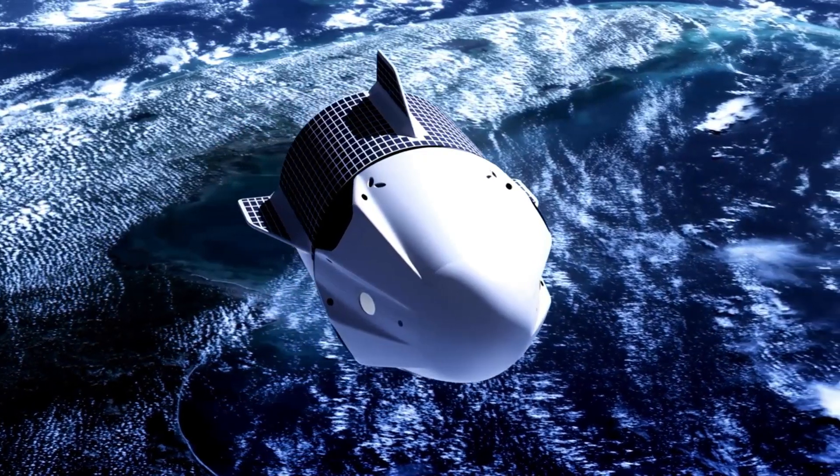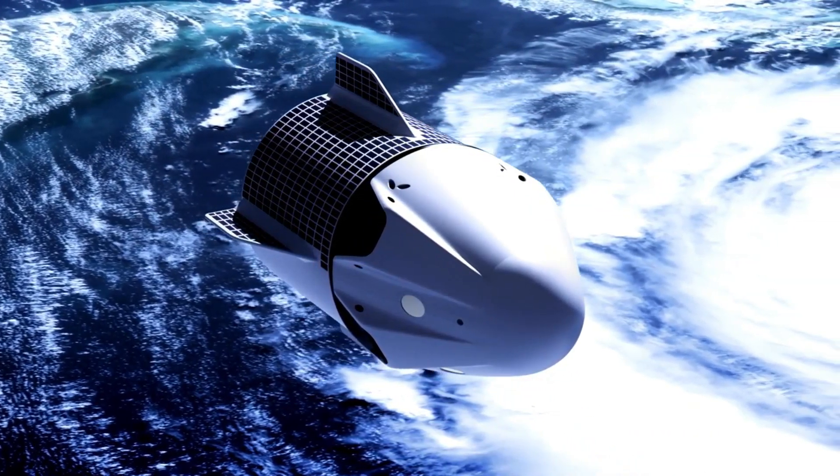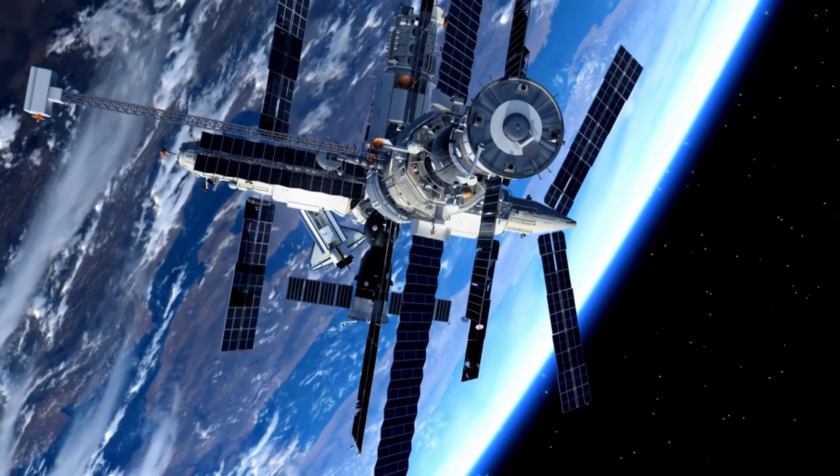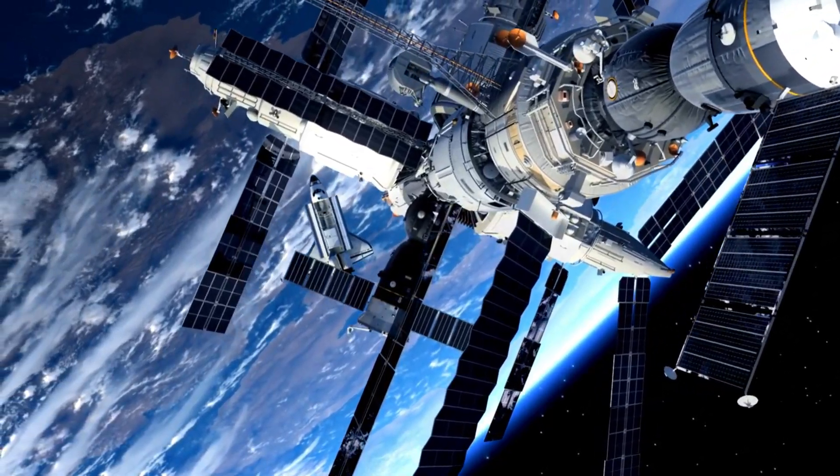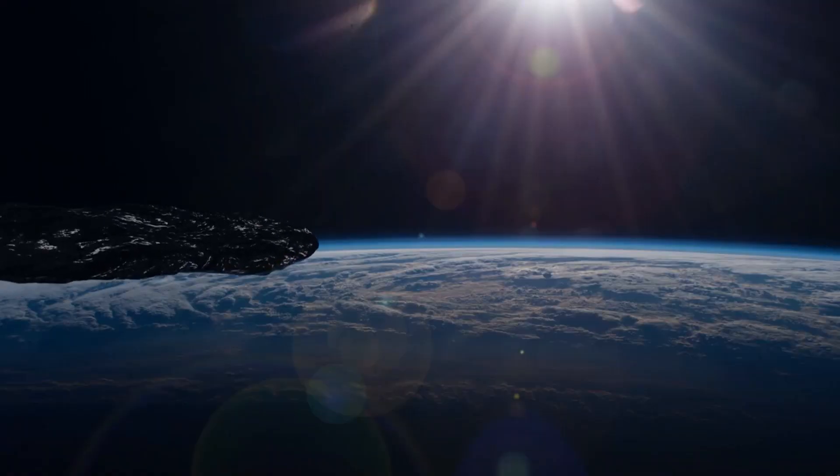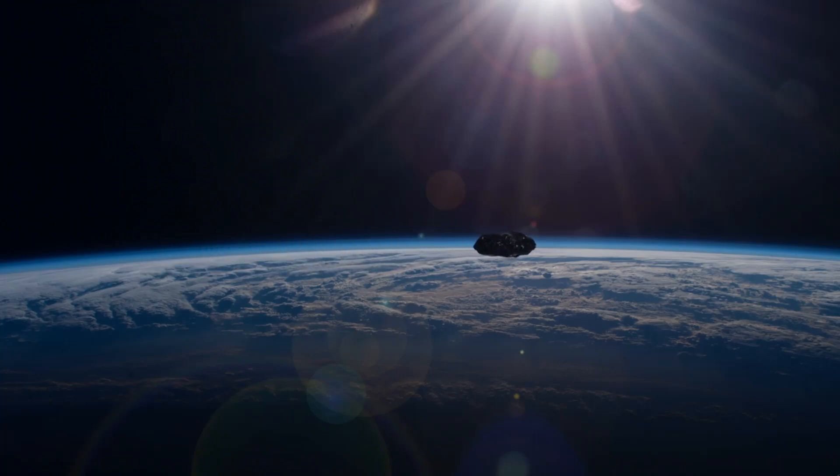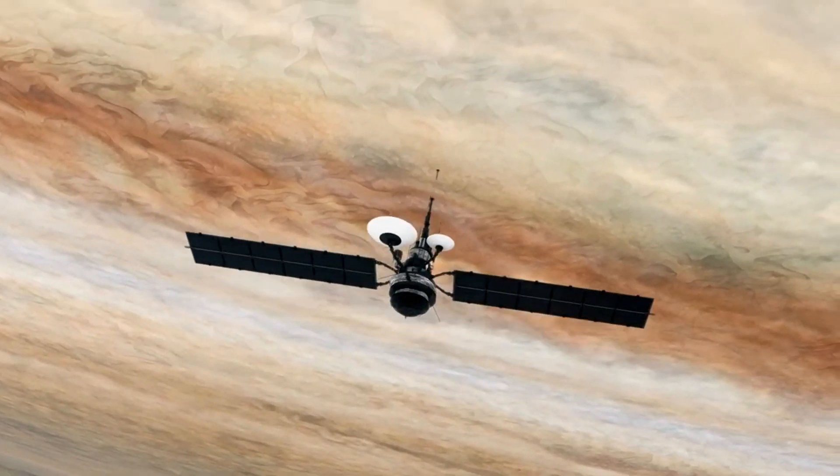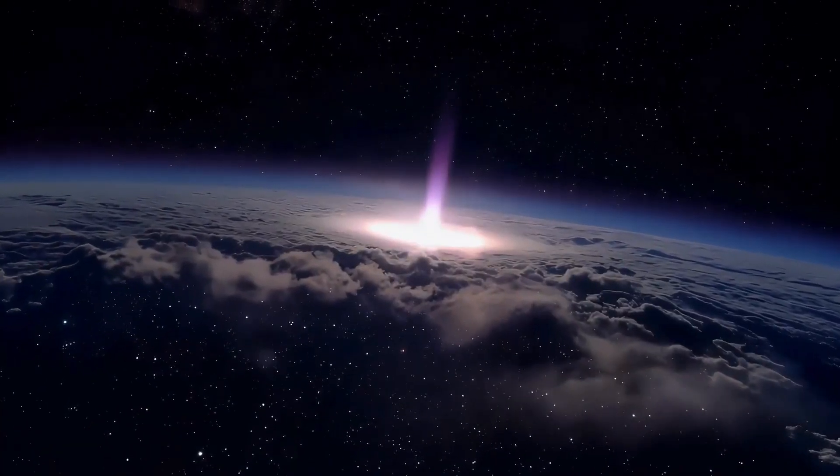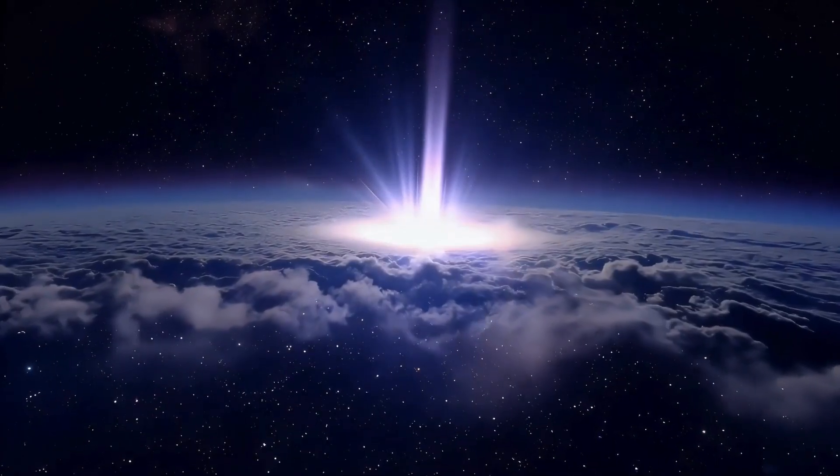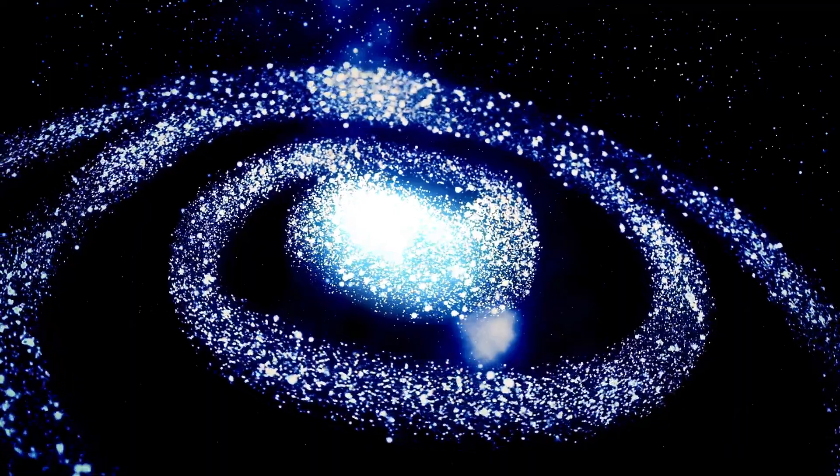Voyager 1, currently the furthest human-made object in space, has not only exceeded all expectations but is also reshaping our understanding of the universe. One of Voyager 1's most surprising discoveries involves a magnetic field in interstellar space that challenges existing scientific theories. Researchers once believed the sun's influence would cease once it reached the heliopause. However, Voyager's findings suggest something far more complex: a magnetic field that is not only stronger but also more intricate than previously thought. This revelation could have profound implications for space technology and the ways we safeguard astronauts from the dangers of deep space.